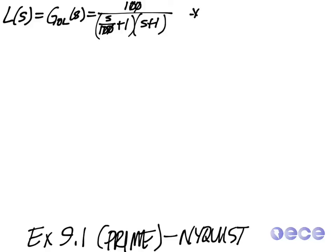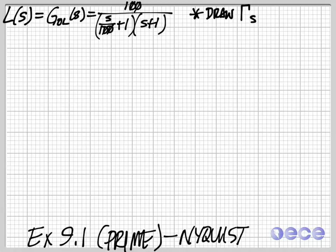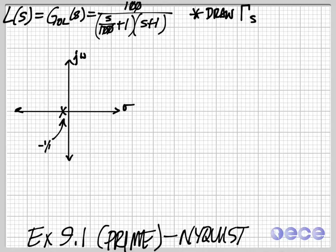Let's do the same thing that we did for the other example, which is we're going to begin by drawing gamma sub s. In order to do this, I'm going to pull out the trusty graph paper. We'll go ahead and draw our axes here. Here's our pole at minus 1 over 100, and here's our pole at minus 1.